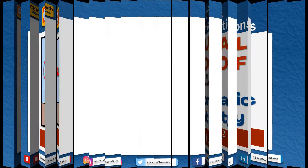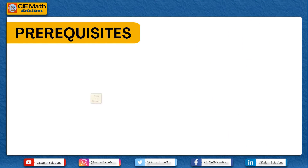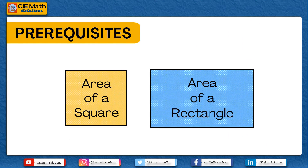But before we proceed, let us recall the prerequisite concepts needed for the visual proof. First is the area of a square, and the second is the area of a rectangle.